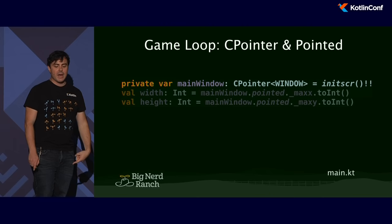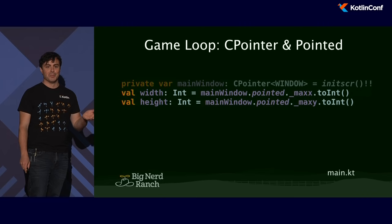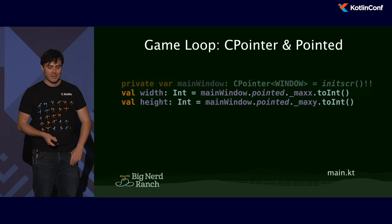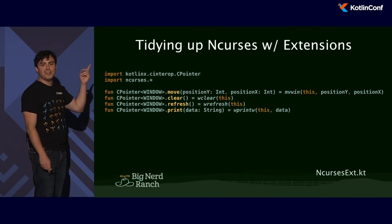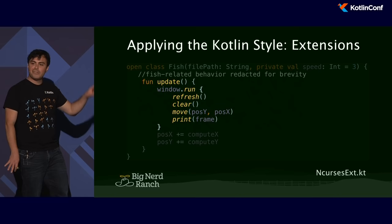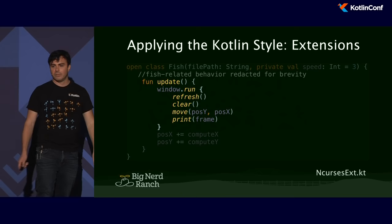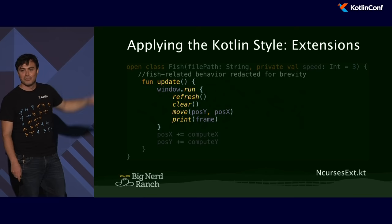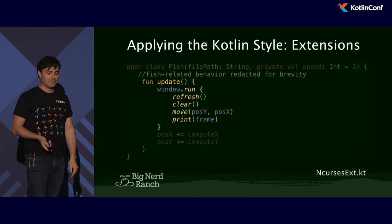You saw the .pointed property — that gives me access to Window. CPointer is actually just the pointer to the memory space. So we do have access to that from Kotlin Native. Now that that's all wired up, I'm going to use my extension functions trick to clean up the API a little bit. I can be a good Kotlin citizen and use a .run block. Those same features we're used to in Kotlin are totally available here. These happen to be native C calls — calls to a binary compiled on my system — but it looks just like normal Kotlin.